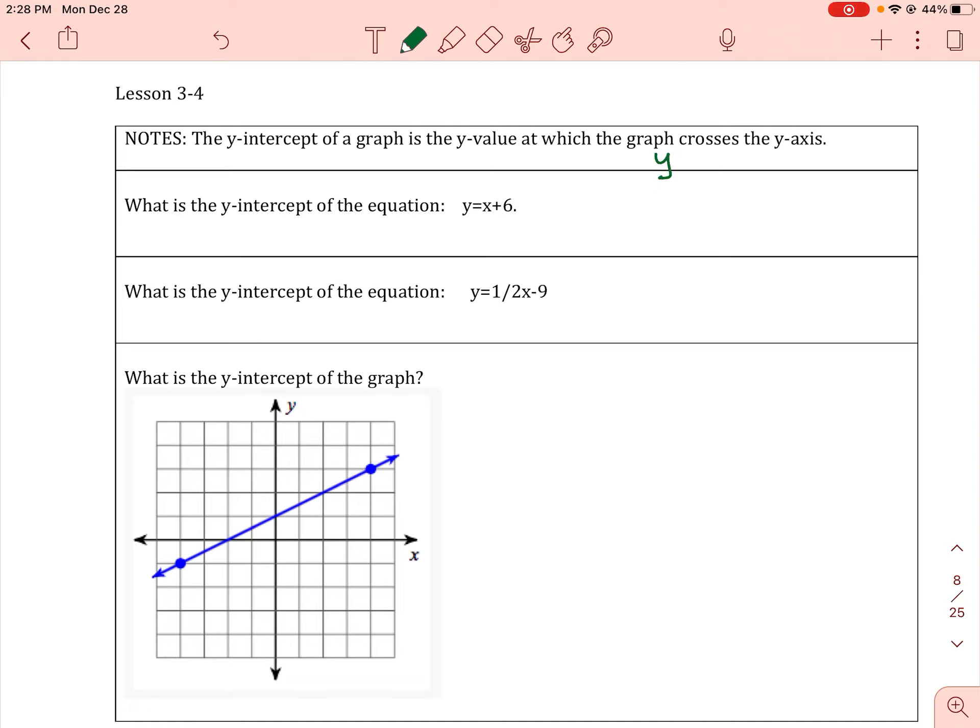We've talked about the equation y equals mx plus b and we spent a lot of time on this letter m. That is your slope. When y is isolated, we know the number in front of x, the coefficient of x, m, is going to be our slope.